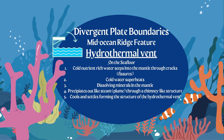These cracks are also called fissures. The cold water seeps into the mantle, which is very hot, so the cold water superheats very quickly. Because it's so hot, it also dissolves minerals — minerals needed here on earth. Once the steam builds up and pressure builds, the water with those minerals precipitates out like steam, creating a smoky plume of water and minerals that exits through a chimney-like structure called a hydrothermal vent.